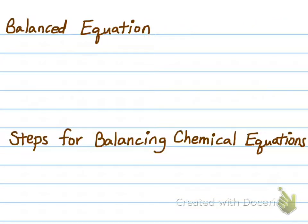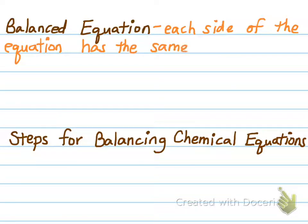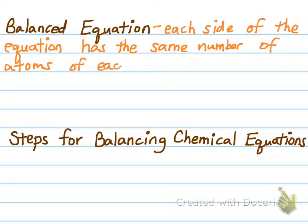You're going to become what I call atom counters. You're going to count to see whether you have the same number of all of the atoms on both the reactant and the product side of your equation. Because the mass of an element doesn't change during a chemical reaction, we can just make sure we have the same number of every type of atom on both sides of our equation, and we'll know we are following the law of conservation of mass.